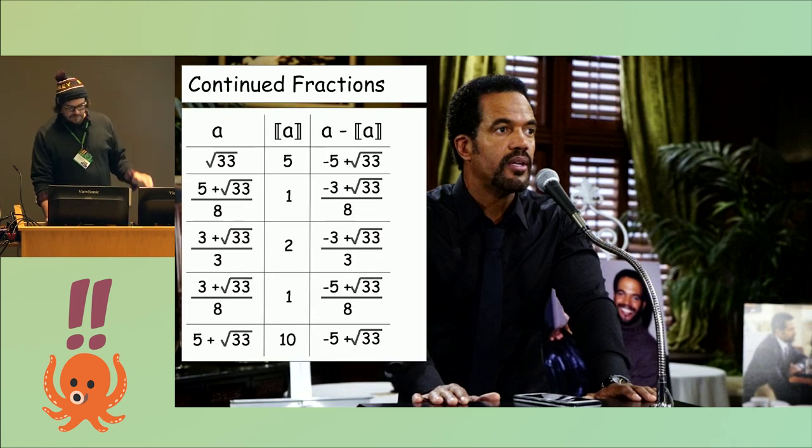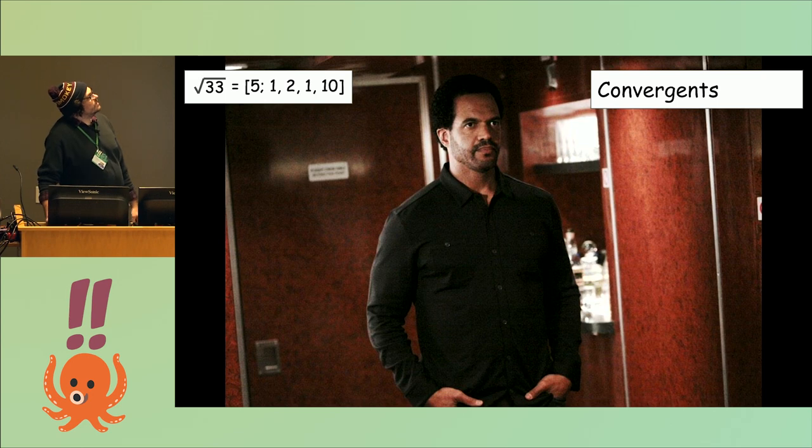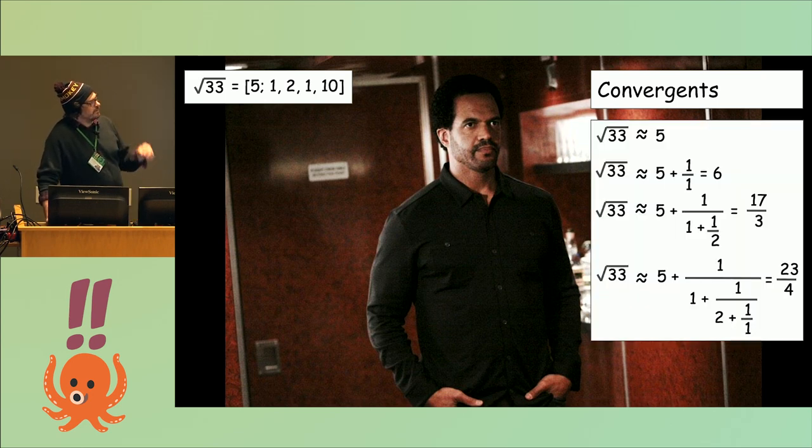For square root 33, it might look like this. A good fact about square roots is that there's a periodicity. You see that this bottom right one has the same result as the top right one, so this will just repeat indefinitely: 5, and then the 1, 2, 1, 10 will just keep going. These integer parts are sometimes called the quotients, and you can use the quotients to build rational approximations to the square root.